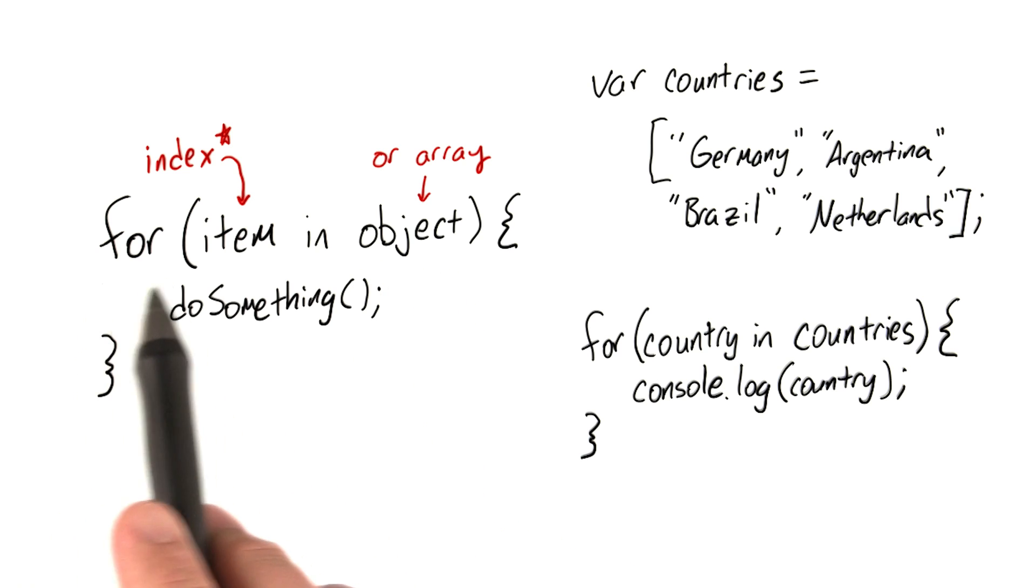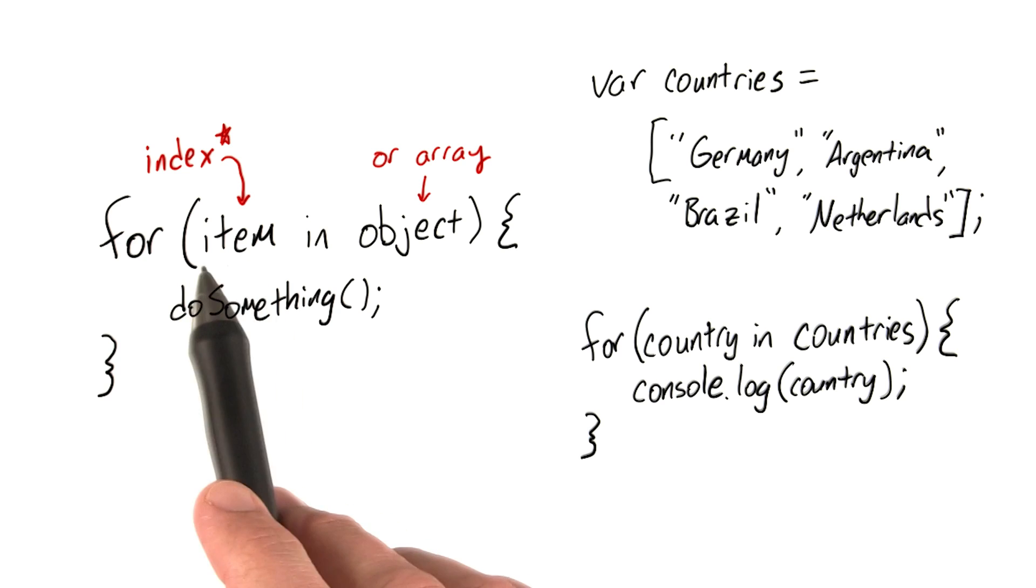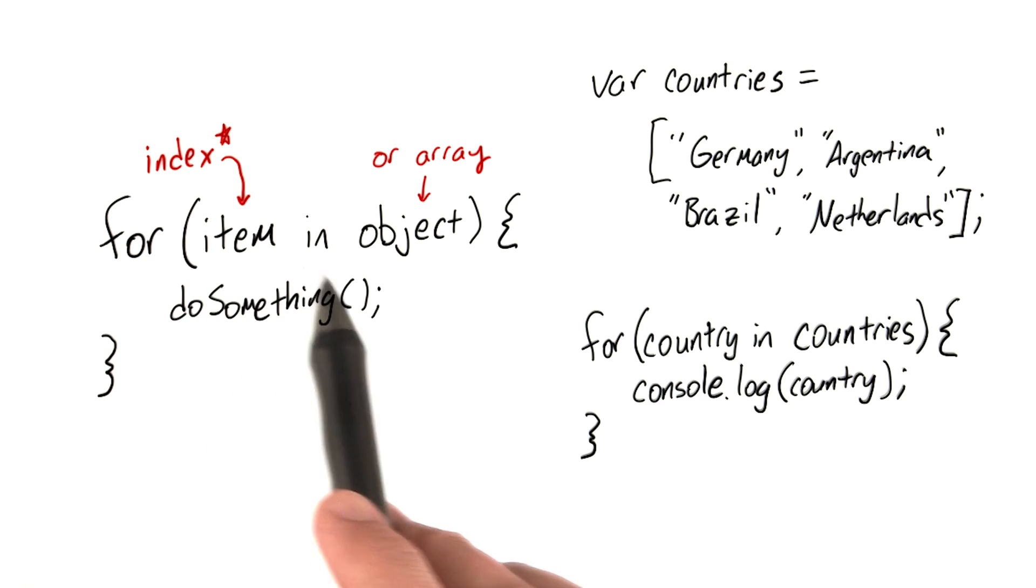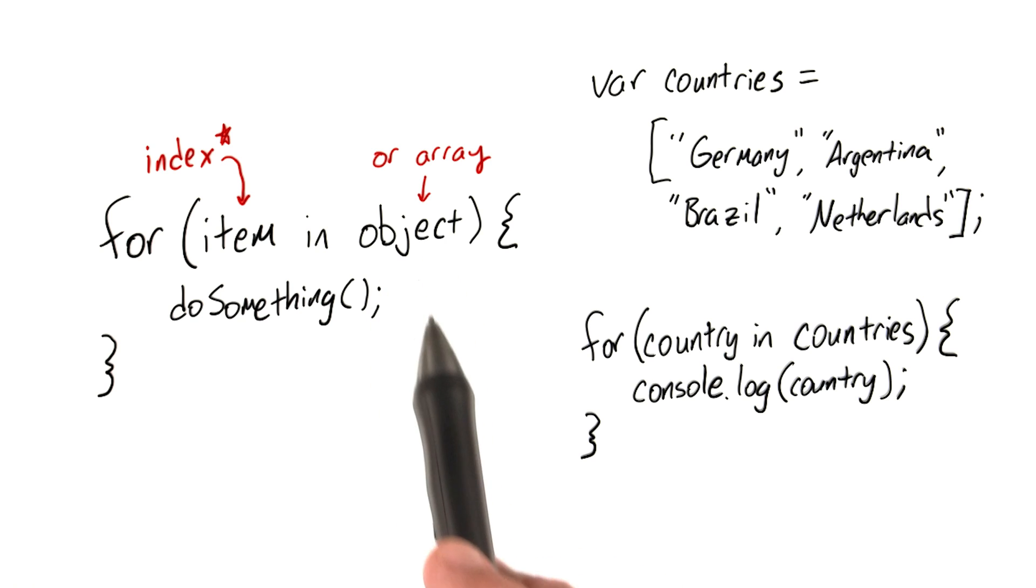The syntax looks like this. The same keyword 'for', we have some kind of iterator, which we can give any name that we want. Then we have the keyword 'in', and then an object or array that we want to iterate through.